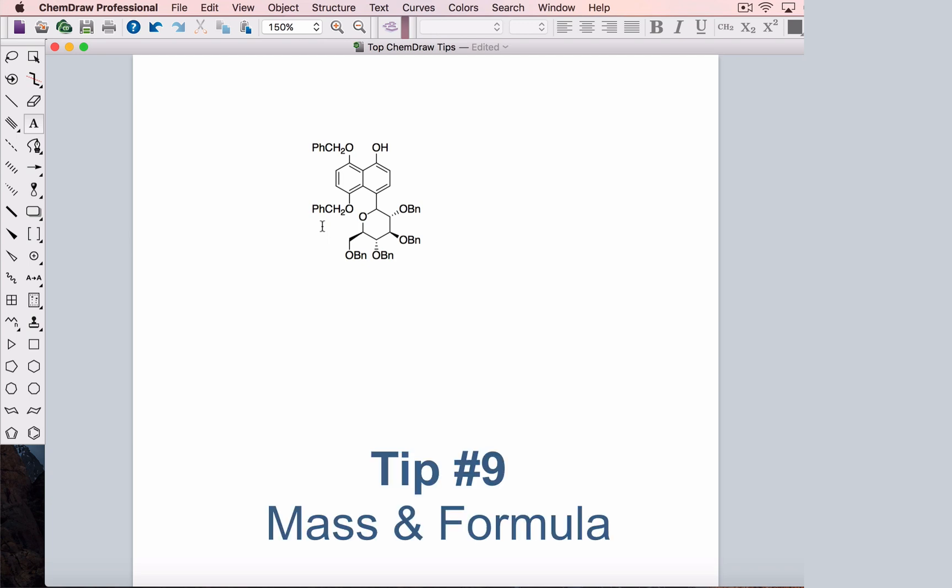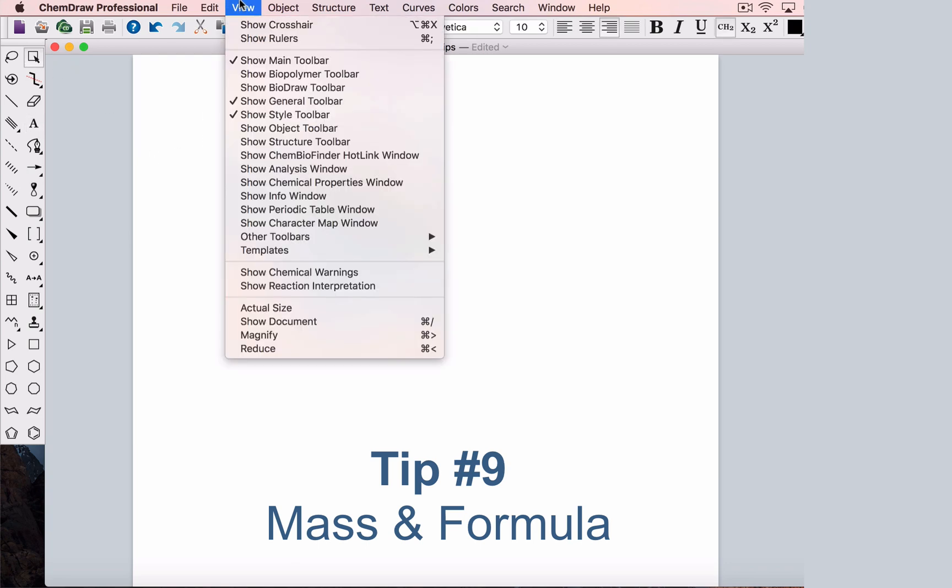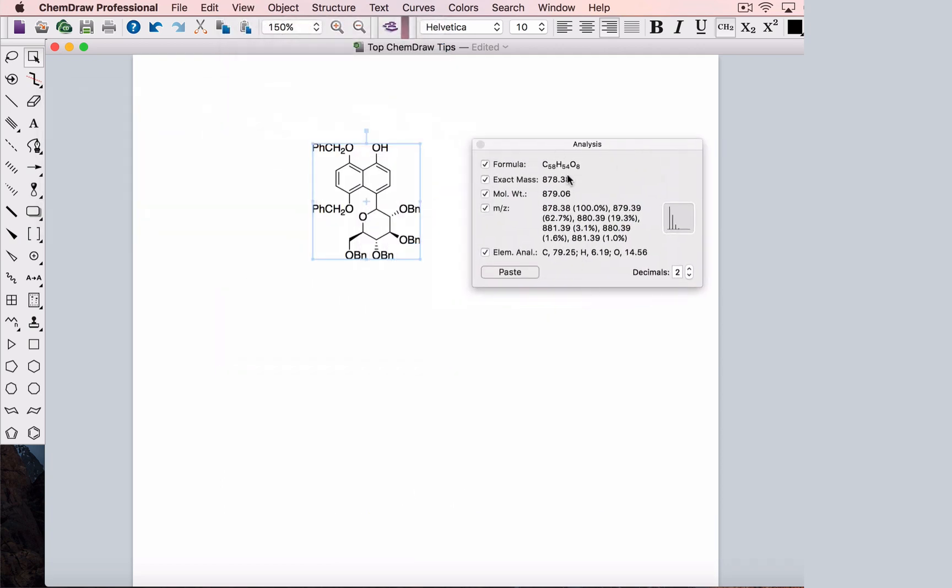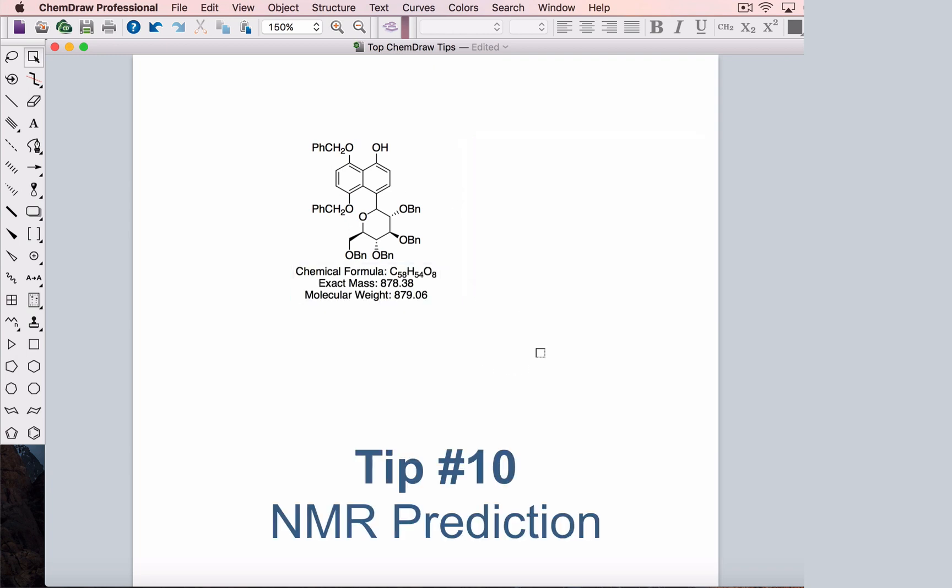Let's say this is a new compound you just synthesized and you need to get a mass spectrum to see if you've actually made what you think you made. You'll need to know the molecular mass and you can calculate this quickly by selecting view and show analysis window. You can paste this info and if you don't need all of the data, you can deselect the items you don't need pasted.